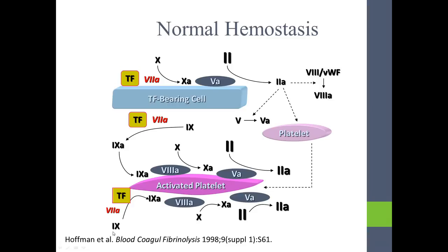Factor IX, along with factor VIIIa, can activate factor Xa, and this combination with factor Va activates thrombin. The complex of factors IX and VIII is called tenase. The complex of factors X and V is called prothrombinase. Factor II is called prothrombin, and factor IIa is called thrombin.